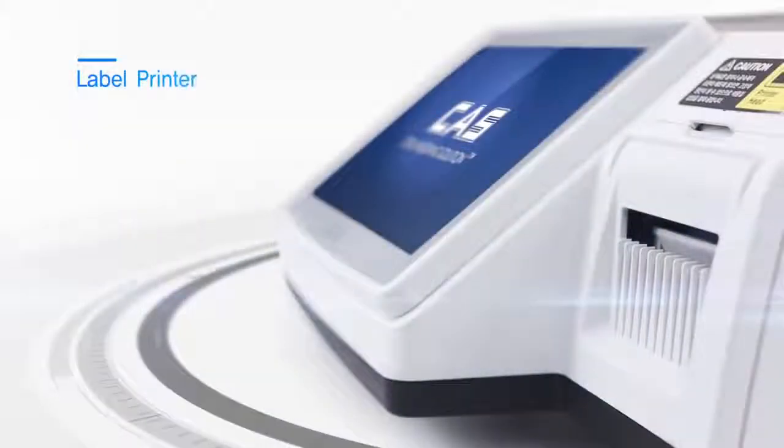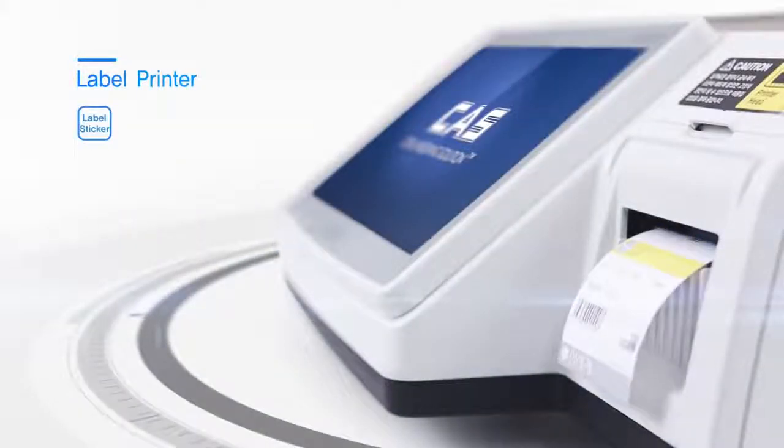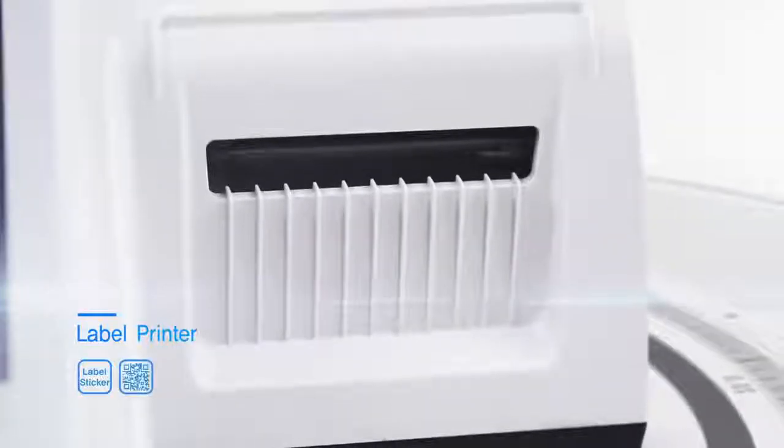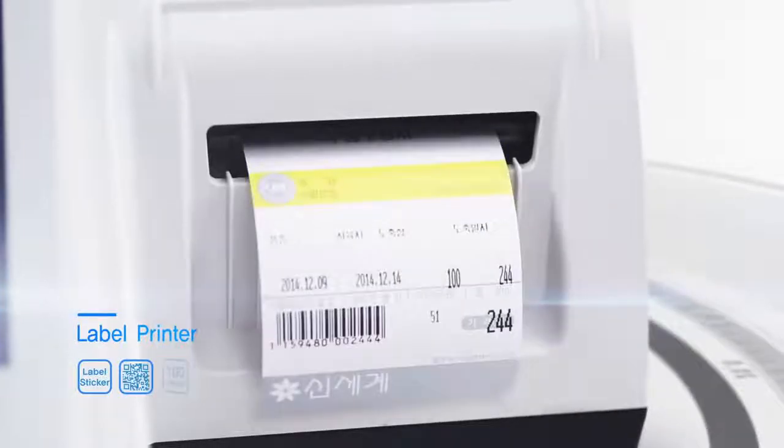Label Printer. CL7200 Printer supports printing for label stickers and tickets. Also available to print out QR codes and barcodes at up to 100mm per second printing speed, increasing working efficiency.